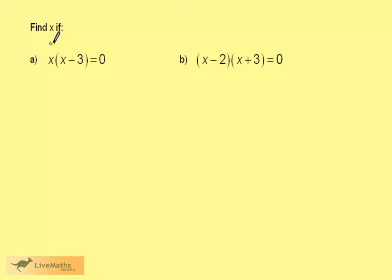We want to find x if x multiplied by x minus 3 in a bracket is equal to 0. We could have the x outside the bracket equal to 0. 0 times anything in the bracket would be 0. Or the bracket could be 0. The contents of the bracket must therefore come to 0.